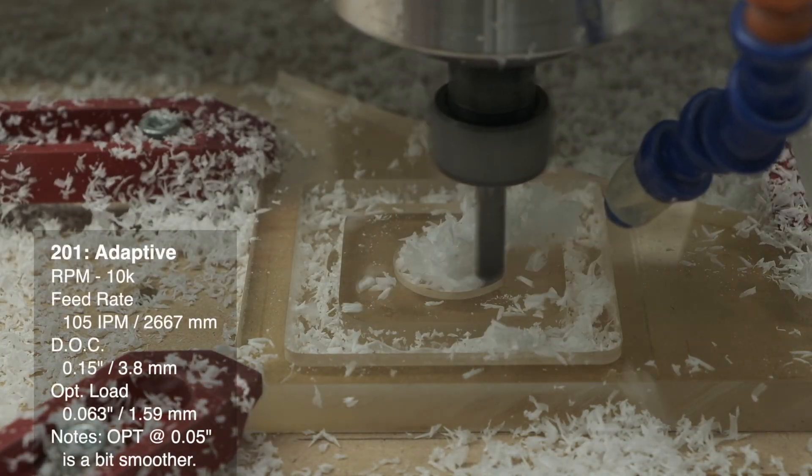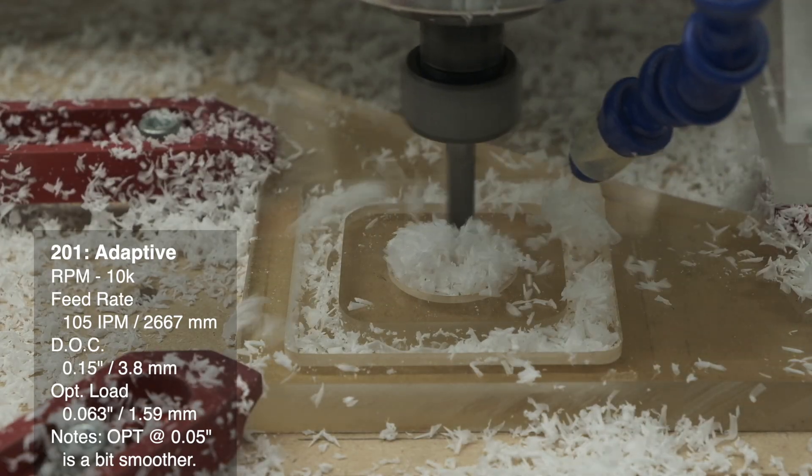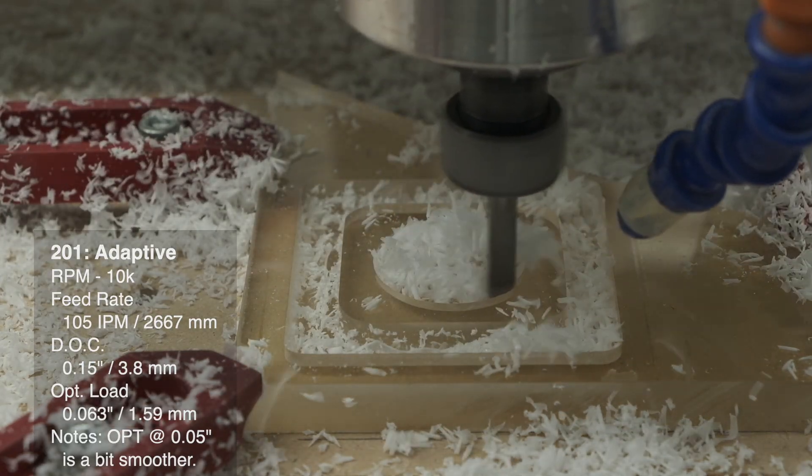Adaptive clearing, 10,000 RPM, 105 inches per minute, a 0.15 inch depth of cut, and a 0.016 inch optimal load.